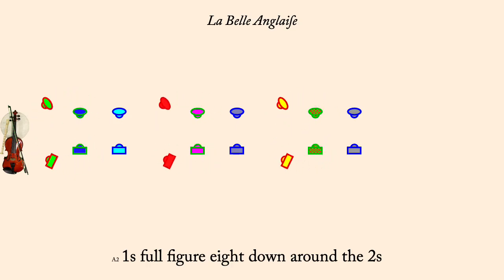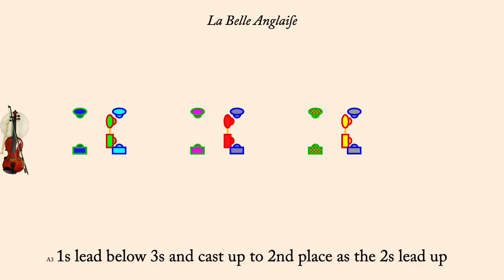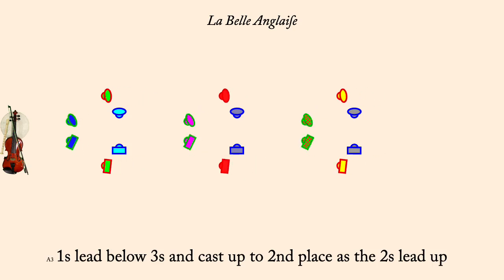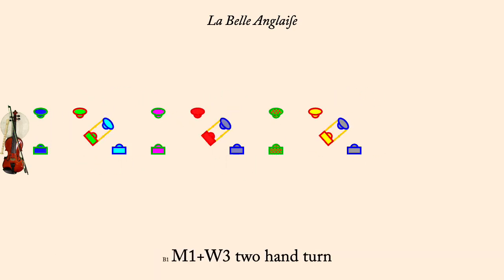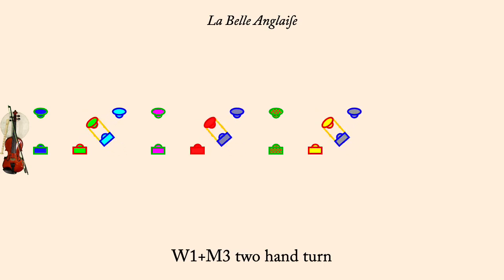Ones lead below threes and cast to second place. Man one, woman three, two-hand turn. Woman one and man three, two-hand turn.